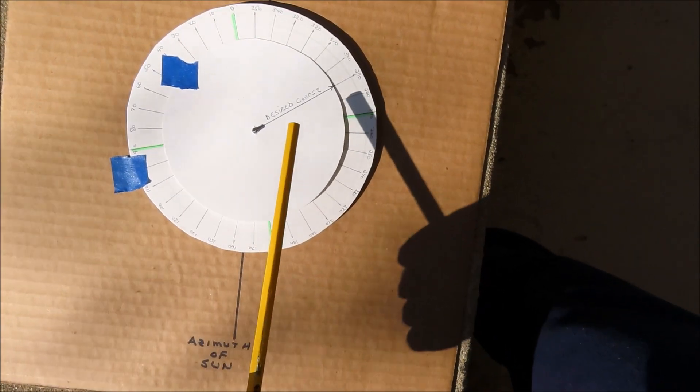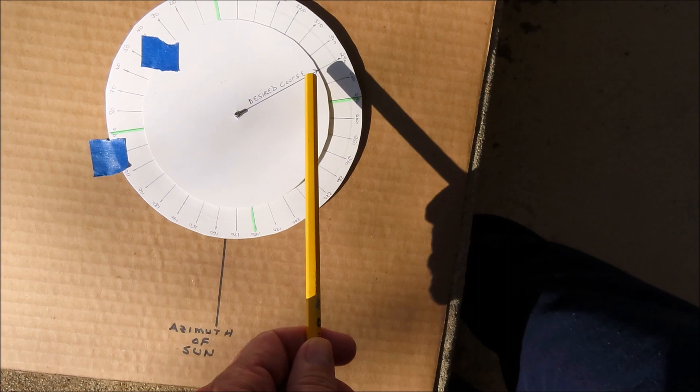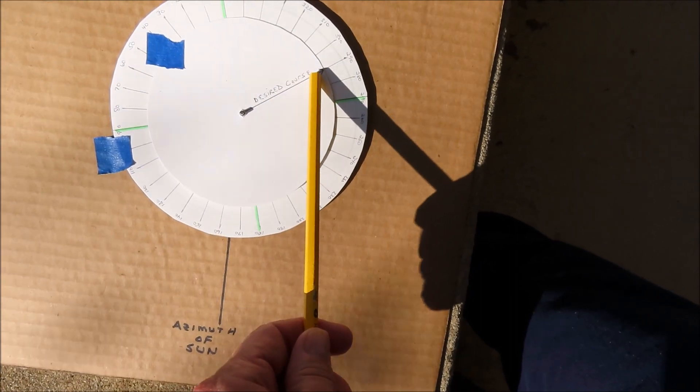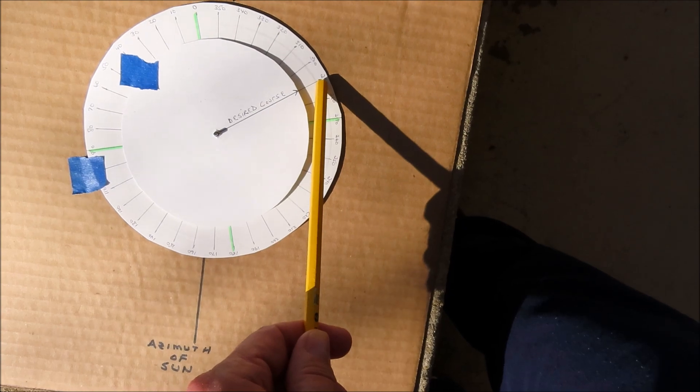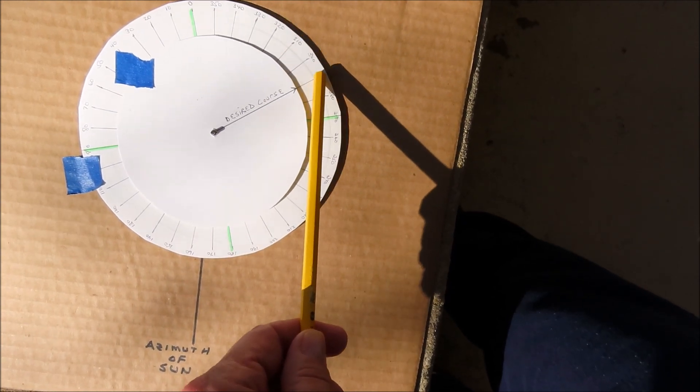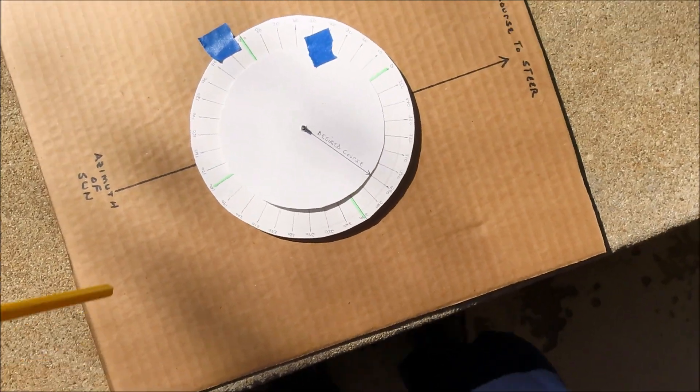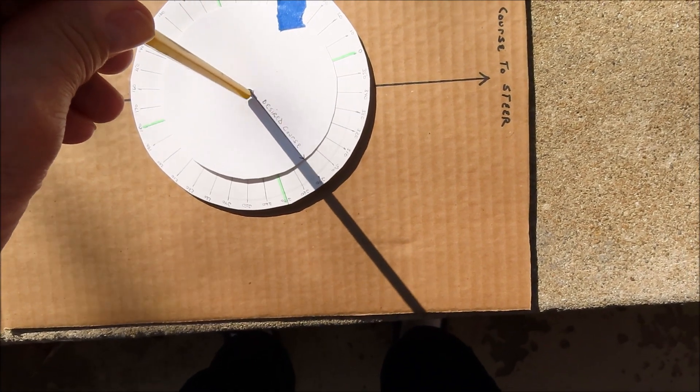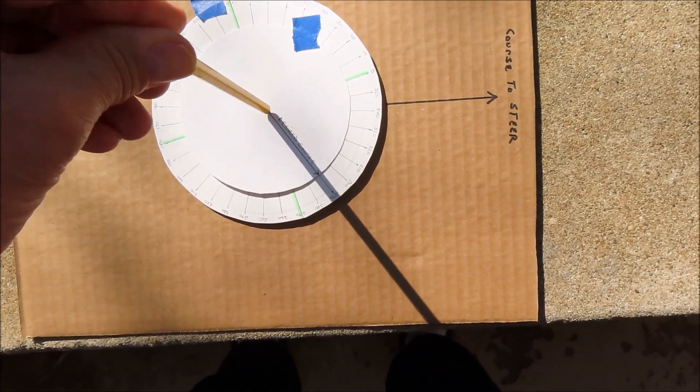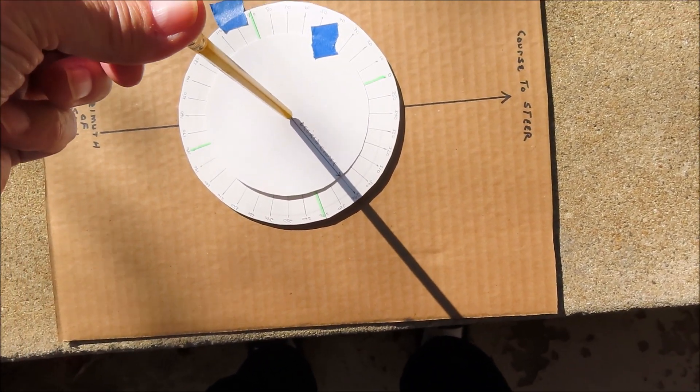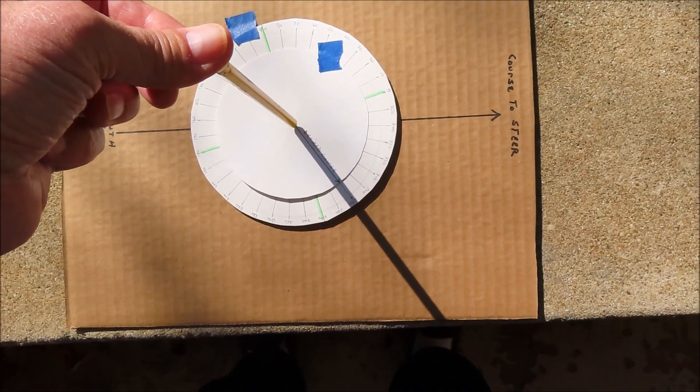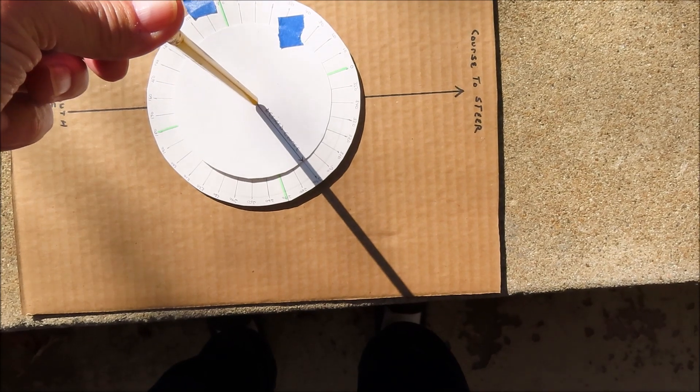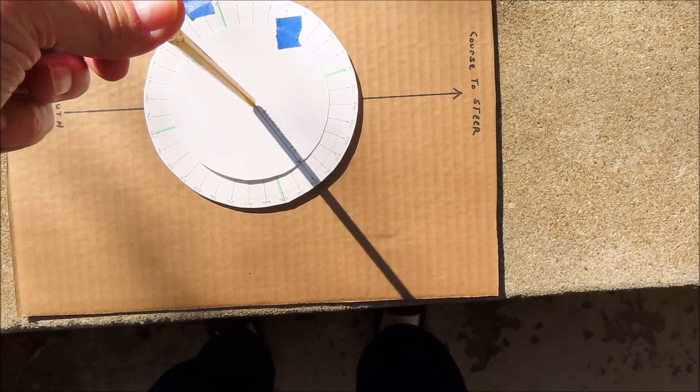And then the direction that I want to, the course I want to steer is 290 degrees. And the real Bagnold compass, there would be a needle sticking up like this. But if you look at that, the shadow of the sun is falling on my desired course of 290.